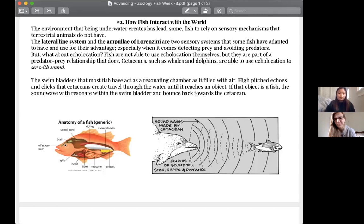So in conclusion, fish aren't able to use echolocation themselves, but echolocation is used on them. And whales and dolphins are able to use echolocation on fish because of their swim bladders.